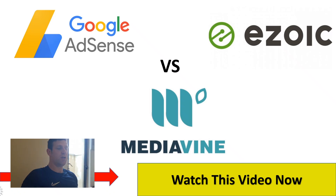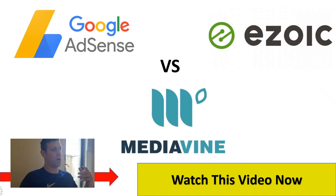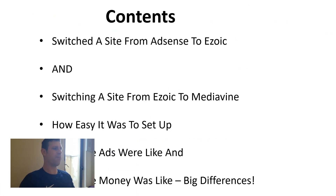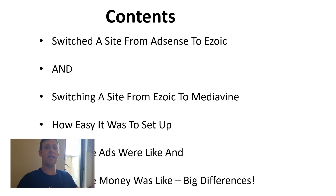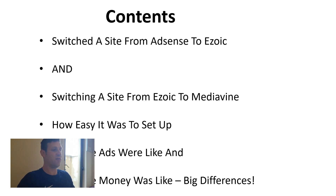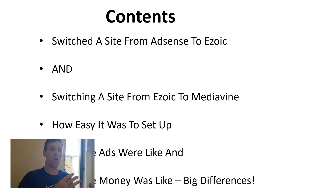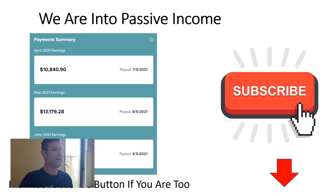We're comparing three of the big boys: AdSense, Ezoic, and Mediavine. We switched one smaller site from AdSense to Ezoic — one we have high hopes for — and we switched one site from Ezoic to Mediavine, a site that got bigger. We've done very well with keyword research on that one. I want to go through how easy each company was to set up, what the ads were like, whether they slowed the site down, and what the RPMs were like.